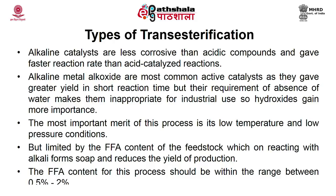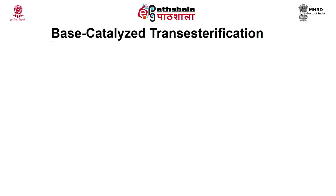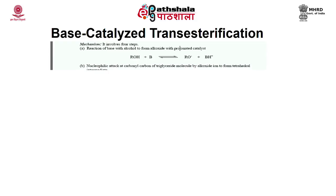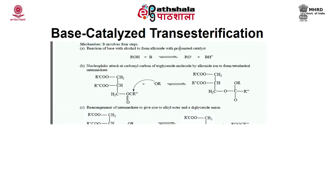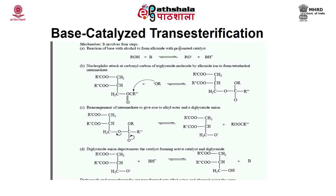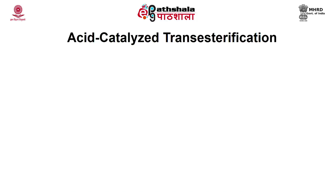The mechanism of base catalyzed transesterification involves four steps: (1) reaction of base with alcohol to form alkoxide with protonated catalyst; (2) nucleophilic attack at the carbonyl carbon of the triglyceride molecule by the alkoxide ion to form a tetrahedral intermediate; (3) rearrangement of the intermediate to give an alkyl ester and a diglyceride anion; (4) deprotonation of the catalyst by the diglyceride anion to regenerate the active catalyst and form diglyceride. From one molecule of oil or fat, three molecules of monoalkyl esters of fatty acids are formed.